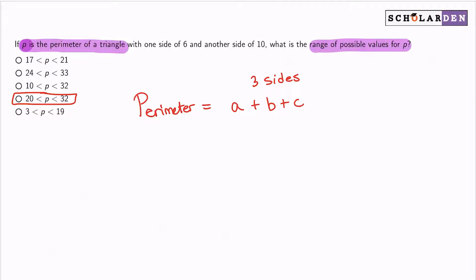Now we understand that one side is six and the other side is 10. So we have six and 10, but we don't know what that third side is.